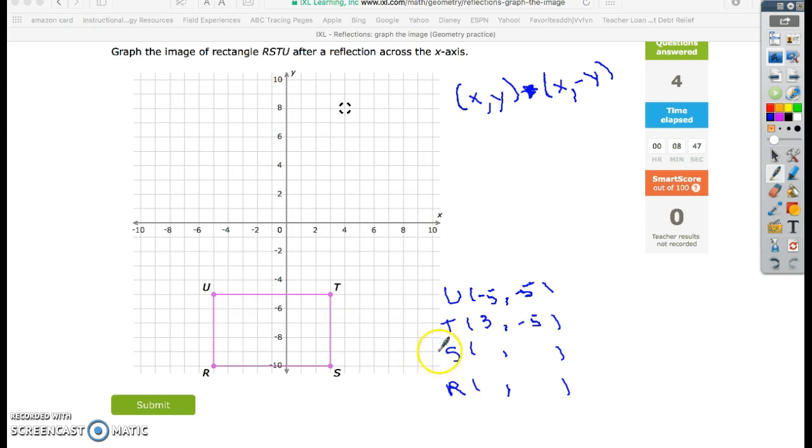For S, the coordinates are 3, negative 10. And for R, our last point, the coordinates are negative 5, negative 10.